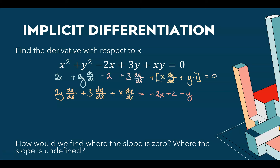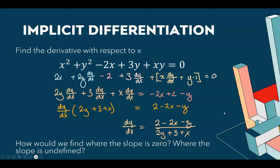We've differentiated, but we want dy/dx isolated. We have dy/dx terms scattered around, so we keep all pieces with dy/dx on the left — 2y dy/dx, 3 dy/dx, and x dy/dx — and move the other terms to the right: subtract 2x, add 2, subtract y. Then factor out dy/dx from the left side and divide by what remains, (2y + 3 + x), giving us dy/dx equals (2 − 2x − y) over (2y + 3 + x). With a specific point, we'd plug in x and y values directly.